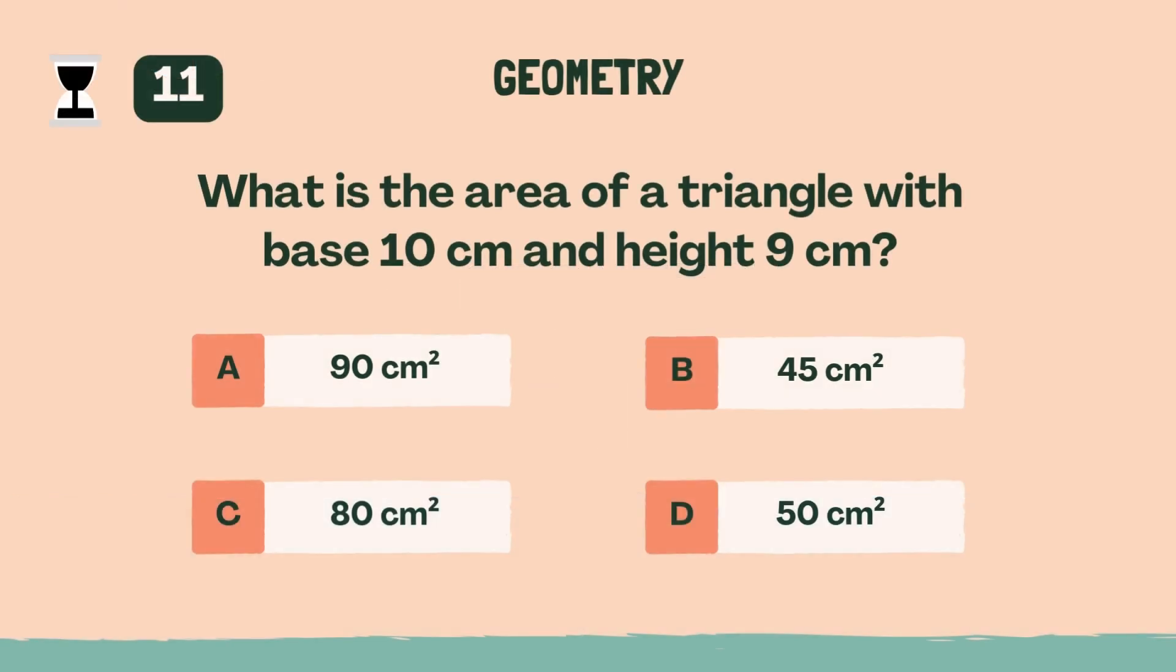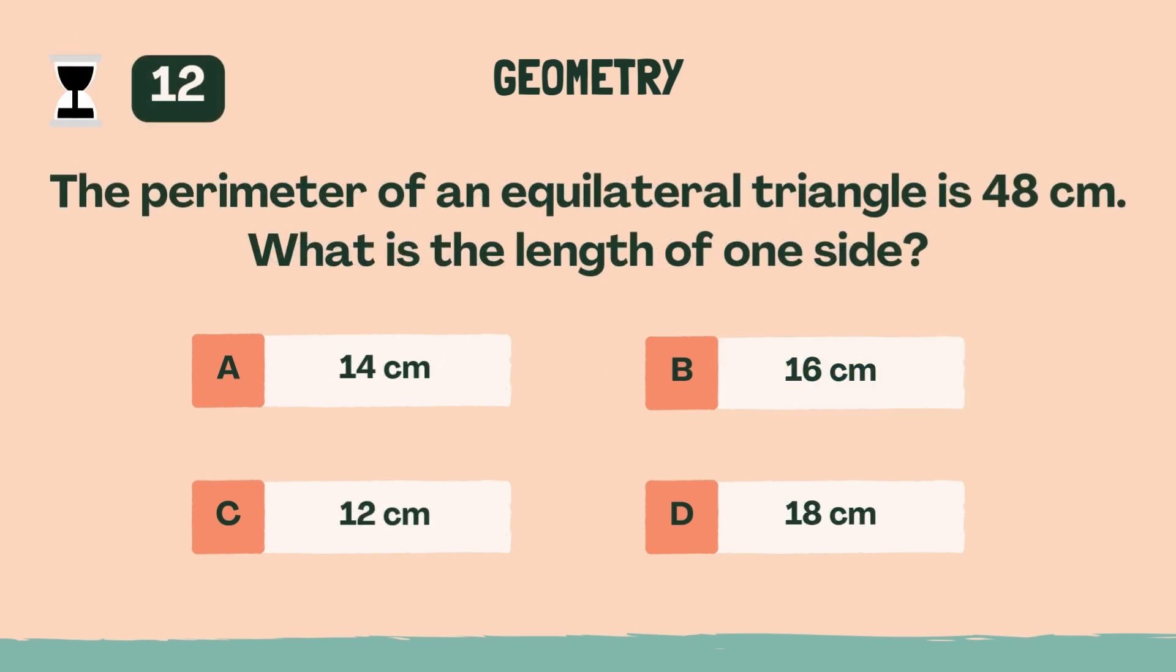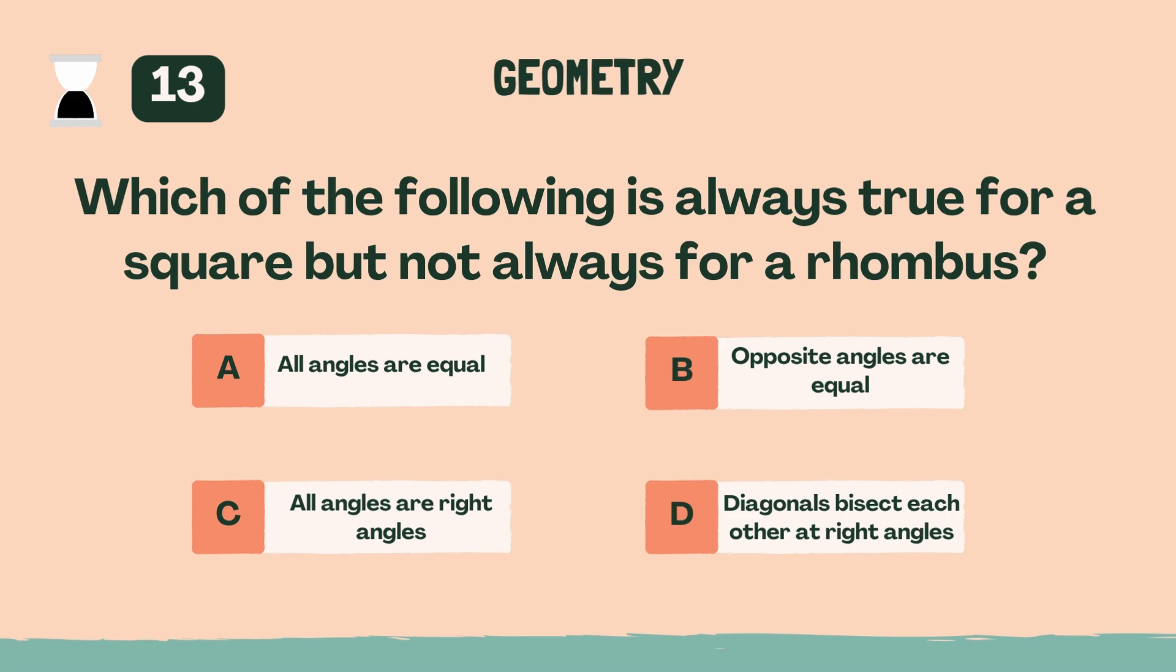What is the area of a triangle with base 10 centimeters and height 9 centimeters? B, 45 square centimeters. The perimeter of an equilateral triangle is 48 centimeters. What is the length of one side? B, 16 centimeters. Which of the following is always true for a square but not always for a rhombus? C, all angles are right angles.